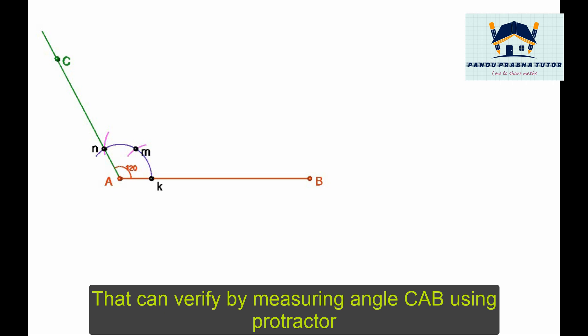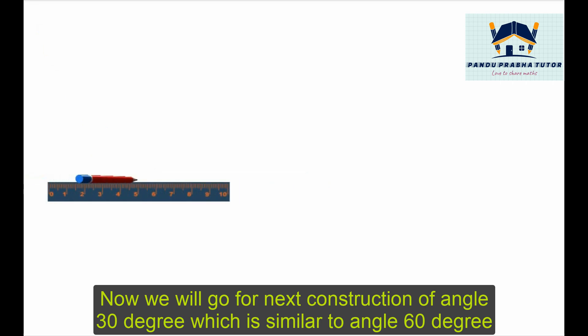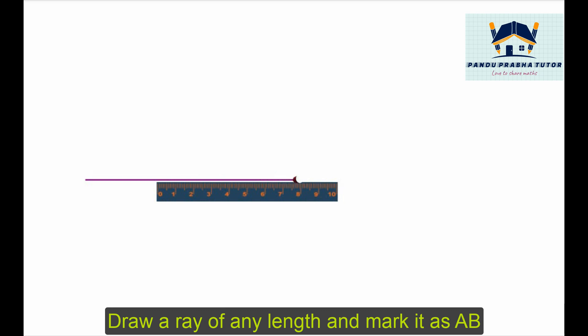Now we will do the next construction of a 30 degree angle, which is similar to the 60 degree angle. Draw a ray of length and mark it as AB.